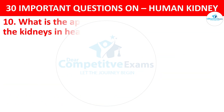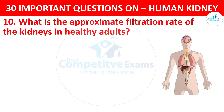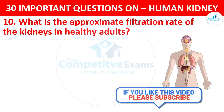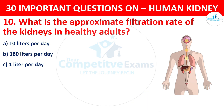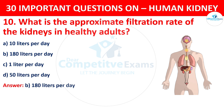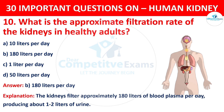Question 10. What is the approximate filtration rate of the kidneys in healthy adults? Your options are: 10 liters per day, 180 liters per day, 1 liter per day, or 50 liters per day. The correct answer is 180 liters per day. The kidneys filter approximately 180 liters of blood plasma per day, producing about 1 to 2 liters of urine.